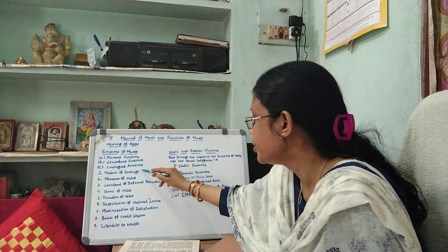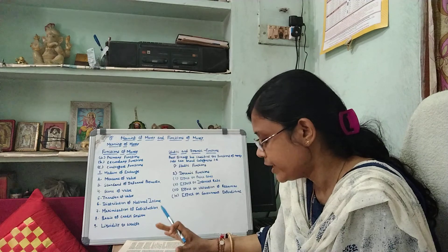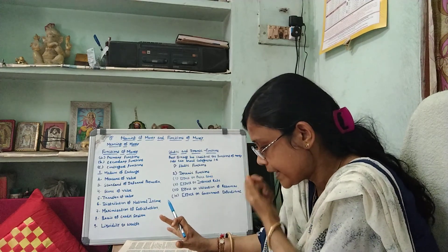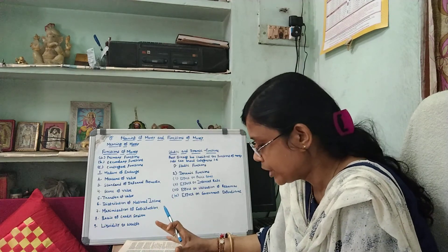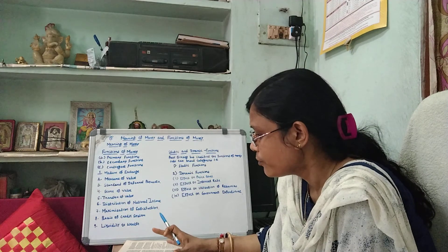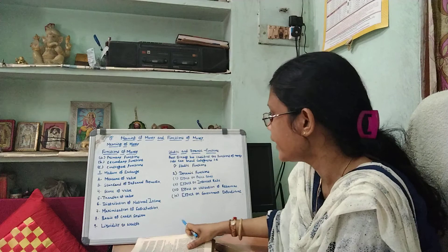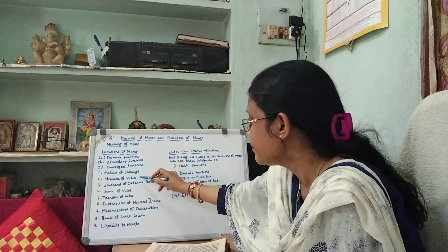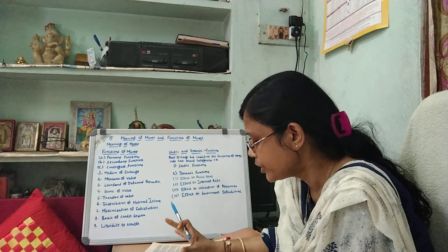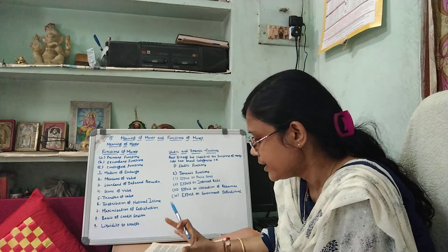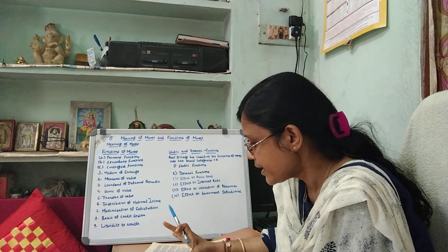First, medium of exchange. The most important function of money is to serve as a medium of exchange or as a means of payment. To be a successful medium of exchange, money must be commonly accepted by people in exchange for goods and services. Second function, measure of value. Money serves as a common measure of value in terms of which the value of all goods and services is measured and expressed.